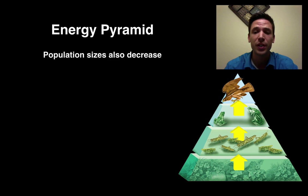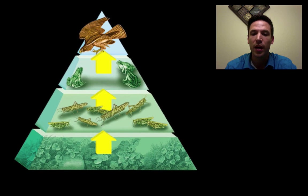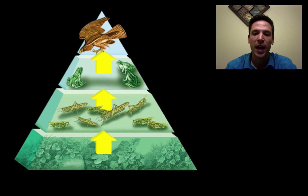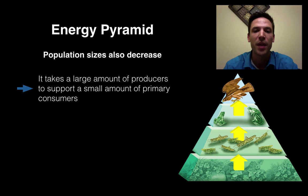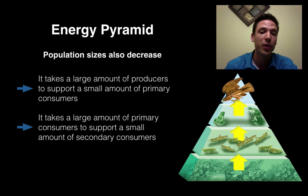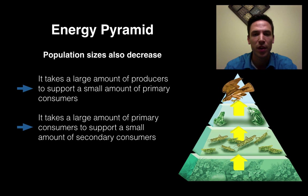An energy pyramid not only shows us that energy decreases from bottom to top, but also that population sizes decrease as well. If there's less energy, there are fewer organisms that can be supported by it. Looking at the pyramid, plants at the bottom have the highest population. If there were more grasshoppers than plants, they'd eat all the plants, the grasshoppers would disappear, and the ecosystem would crash. It takes a large number of producers to support a smaller number of primary consumers, and a large number of primary consumers to support a smaller number of secondary consumers.